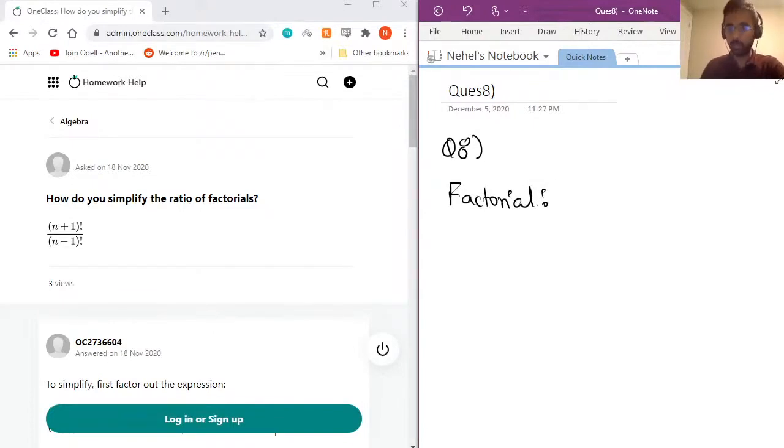leading up to one. So basically, a factorial of number n would be equal to n times (n-1) times (n-2), all the way until we get to the number 1.